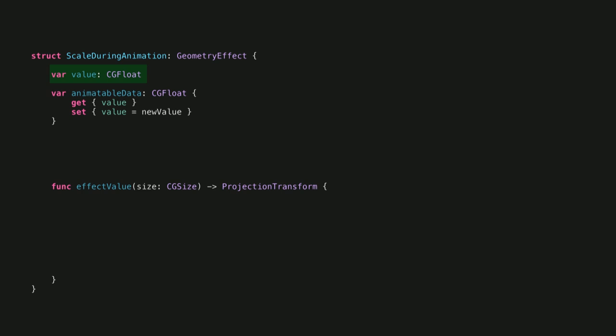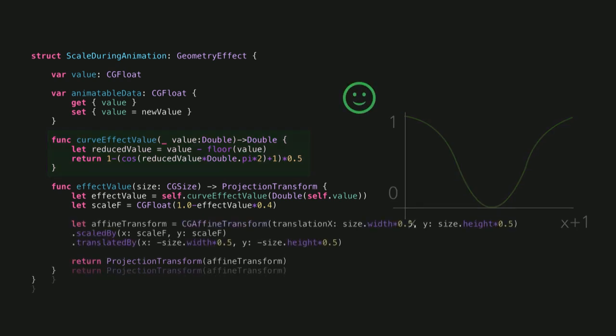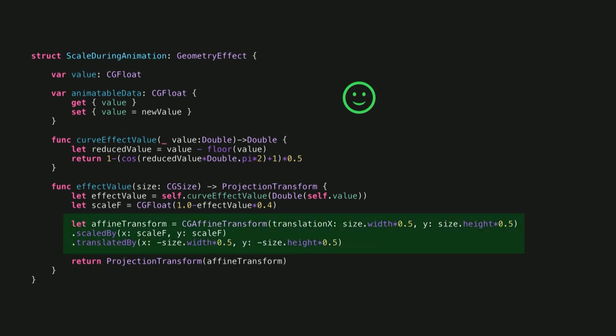The geometry effect has a value — this is the value that will be interpolating during the animation. And it has the main function called effect value. Here, you will be altering the projection transform and the appearance of your view. Let's try to build this scaling mechanism as we've seen on those squares. I feature here a new function that creates this curve, and we will try to fit this curve on the scale during the animation. In our main function, we are actually building a new transformation based on these parameters. And as expected, it works — whenever you animate your view, it scales during the movement. It's as simple as that.